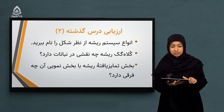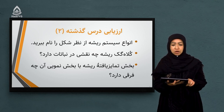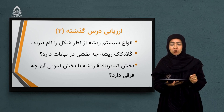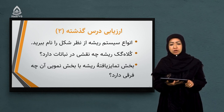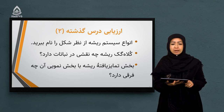سوال چهارم: انواع سیستم ریشه از نظر شکل را نام ببرید. از نظر شکل دو نوع سیستم ریشه داریم: یک، ریشه راست؛ و یک، ریشه پاشان. در بعضی کتاب‌ها همان پاشان را افشان هم میگویند. اگر ریشه اصلی از ریشه فرعی قابل تشخیص باشد، این میشود سیستم ریشه راست. و اگر ریشه اصلی و فرعی قابل تشخیص نباشند، سیستم ریشه افشان یا پاشان خواهد بود.